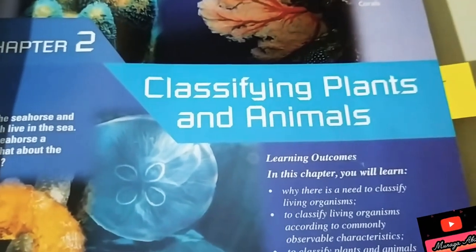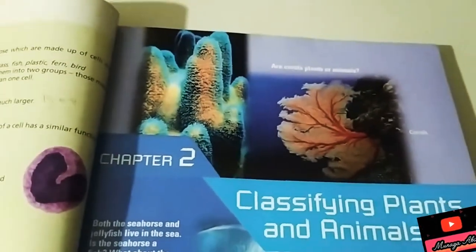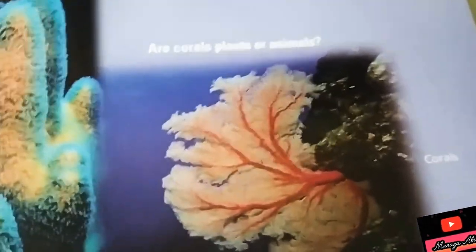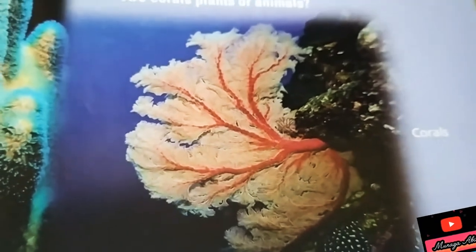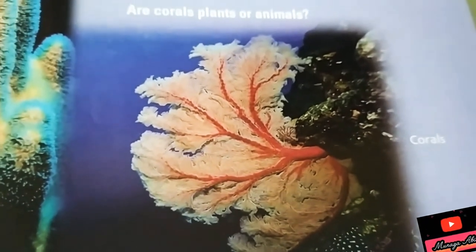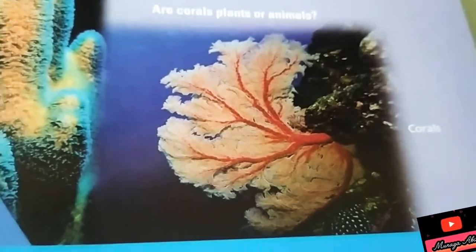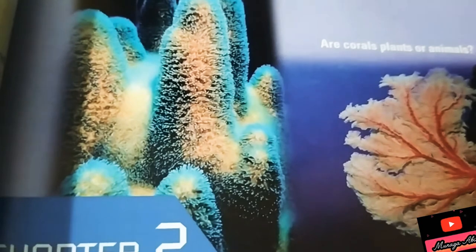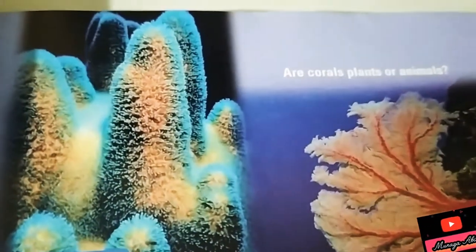In ILS International Secondary Science, today we are studying Chapter 2: 'Classifying Plants and Animals'. The first triggering question asked is: are corals plants or animals? These are corals — beautiful corals. They seem like plants but actually they are animals. Some other animals shown here are sponges.